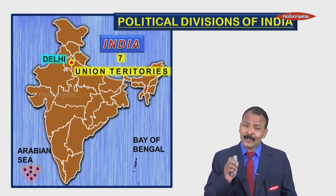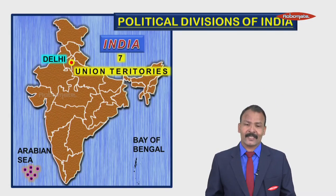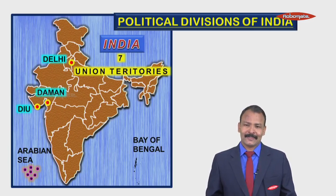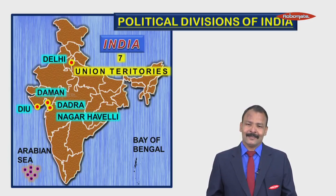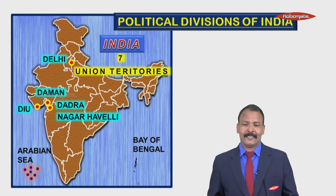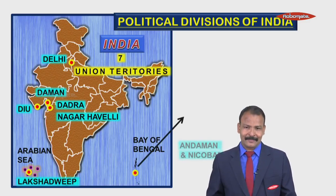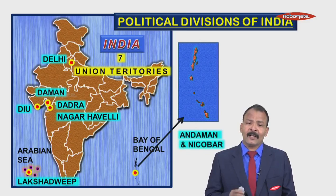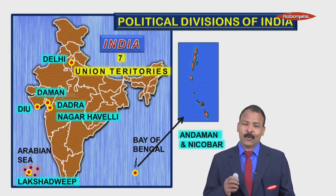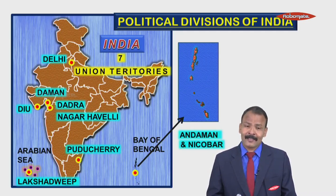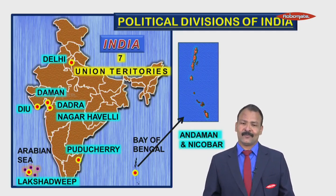The seven union territories of our country are: Delhi, Diu, Daman, Dadra and Nagar Haveli, Lakshadweep — which is an island — Andaman and Nicobar Islands, and Puducherry. These are the seven union territories of our country.